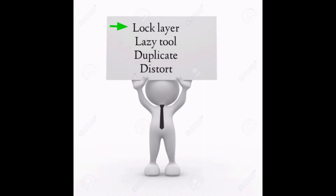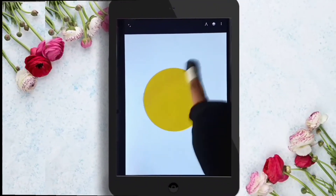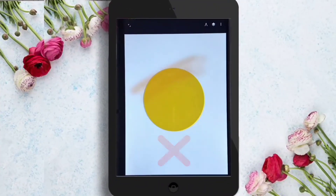Today we will learn the function of lock layer, lazy tool, how to duplicate things, and what is the function of the distort tool. If you draw anything like a circle and you want to shade in your specific drawing...